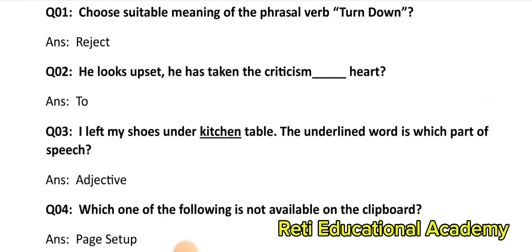Question number 1: Choose the suitable meaning of the phrasal verb 'turned down'. The correct answer is: Reject. Question number 2: He looks upset. He has taken the criticism. The answer is: Too hurt. Question number 3: I left my shoes under the kitchen table. The underlined word 'kitchen' is which part of speech? The correct answer is: Adjective.